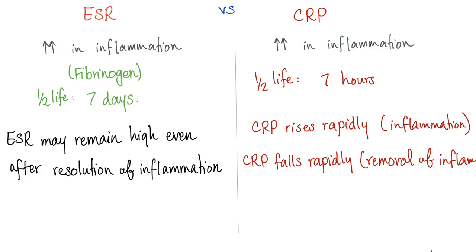ESR versus CRP: both increase in inflammation. ESR depends on fibrinogen, whose half-life is about 7 days, which means ESR may remain high even after resolution of inflammation — the fibrinogen is still in the system. However, CRP is better because its half-life is only 7 hours. So CRP rises rapidly and falls rapidly when you remove the inflammation. After curing inflammation, if you want to check if a patient is improving, use the CRP. The mnemonic: C-reactive protein is more reactive, more flexible — it rises rapidly and falls rapidly.